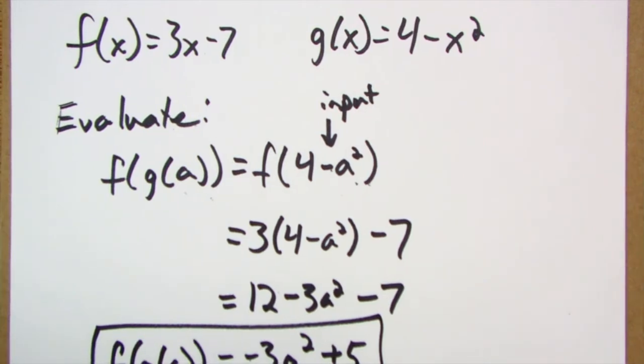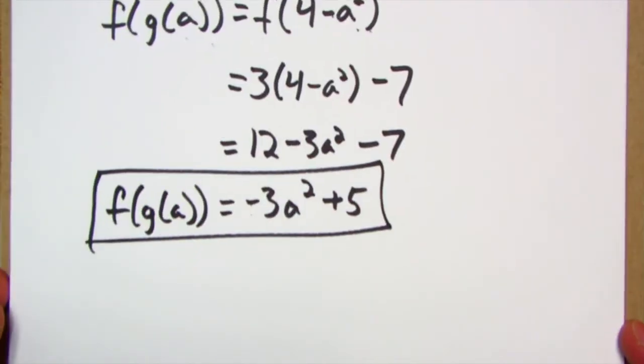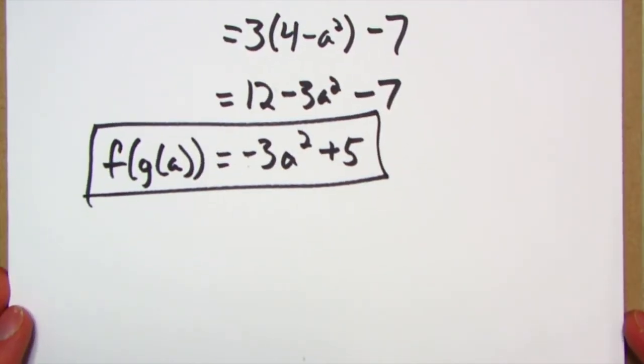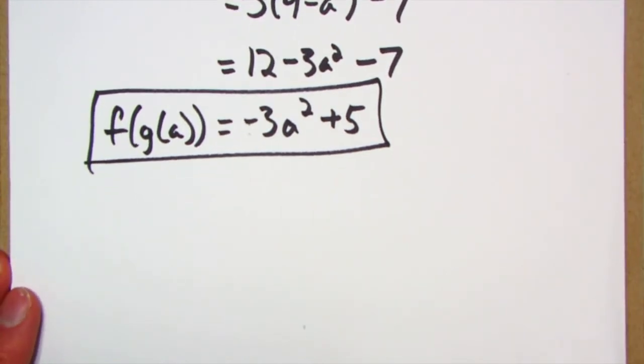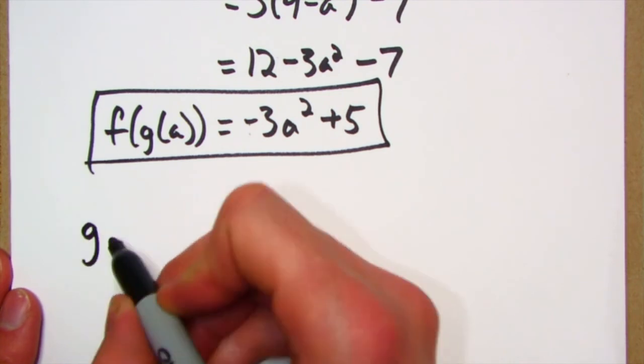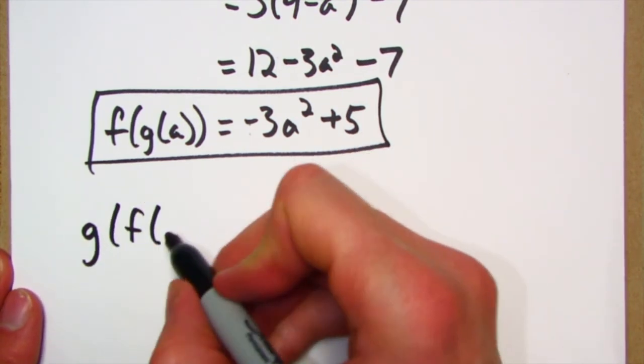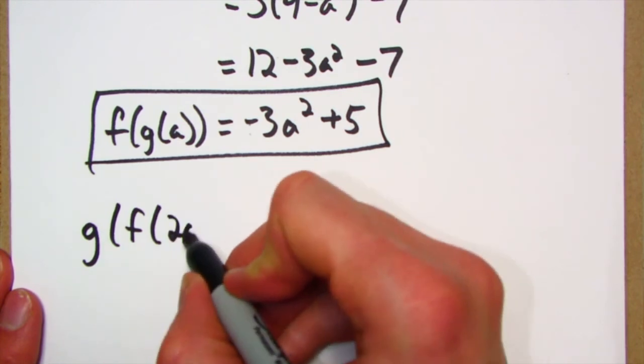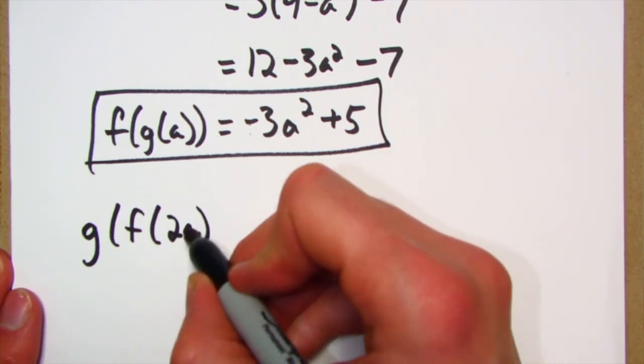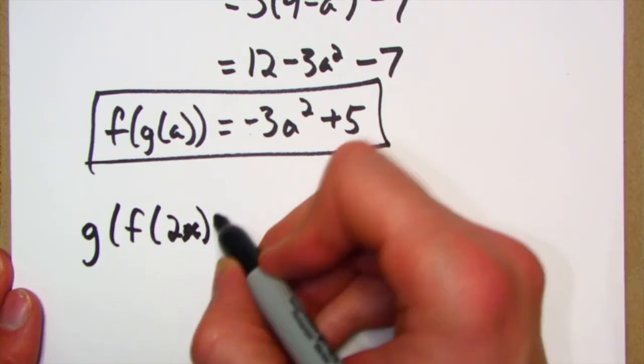Okay, you think you're smart, think you can do this next one? Here we go. We're going to use the same functions. This time we're going to do g of f of 2x. No, let's do 2x, 2x, there we go.